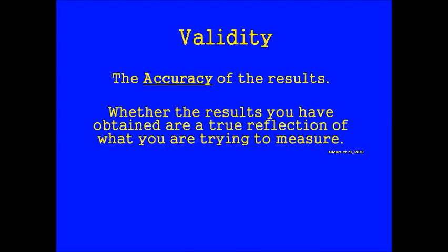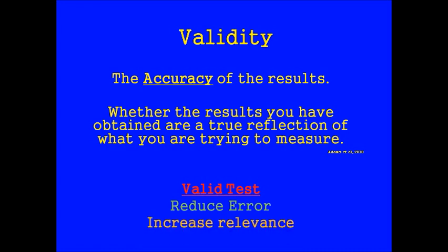Going back to our definition, we need to make sure that our results are as accurate as possible — this makes them valid. We want to make sure that the results we get are a true reflection of someone's actual fitness, with no other reasons why the result collected isn't true. In order to make a valid test, we must reduce error wherever possible, which can often be done by following the correct protocol. Another way of making a test valid is to make sure that it's relevant — relevant to the sport and to the particular client we're working with.